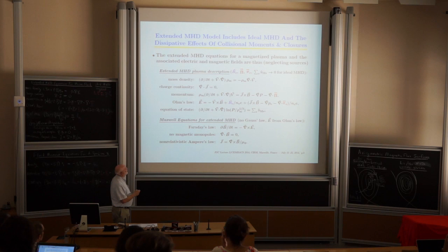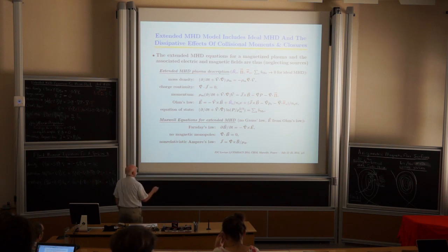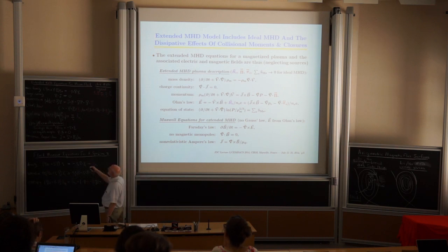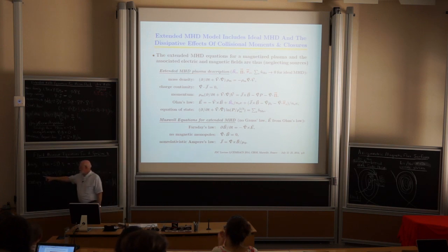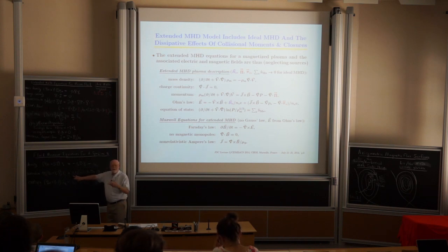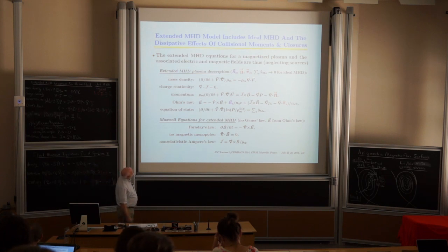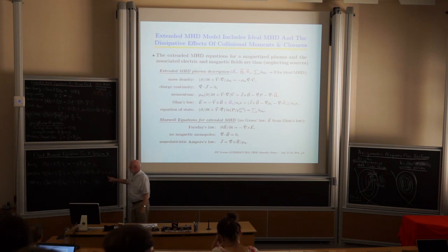We get Ohm's law by taking the electron momentum equation and dividing through by NE. We get E equals minus V cross B, plus the friction between species and divergence of pi, and so forth.